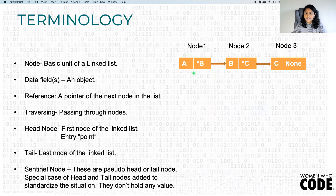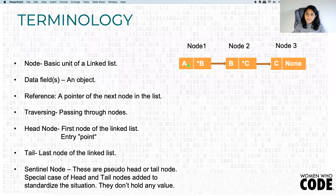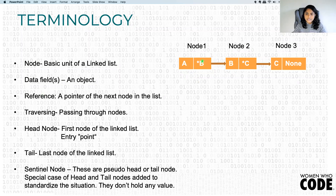The node is the basic unit of a linked list — a linked list is made up of nodes and all nodes are linked to each other. The data field is an object that holds the value; it could be a string, an integer, or a character. The reference holds the reference to the next node — it's a pointer to the next node in the linked list. We could say it stores the memory location or address of the next node. This reference will hold the address of the second node, B.